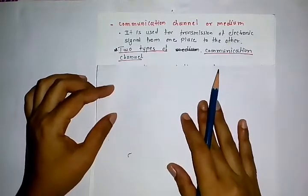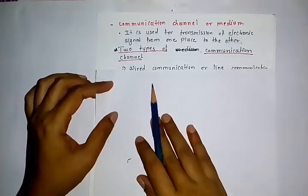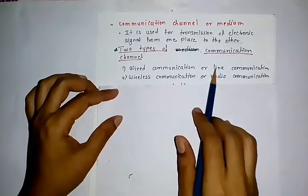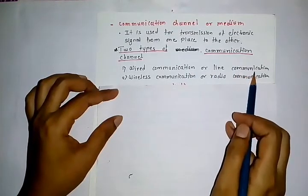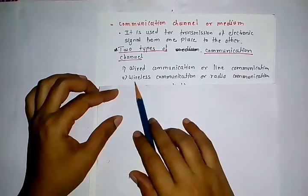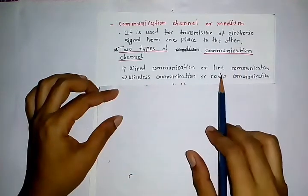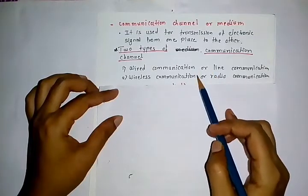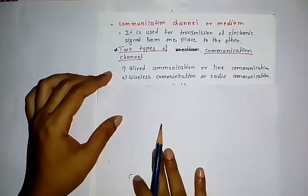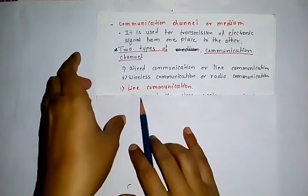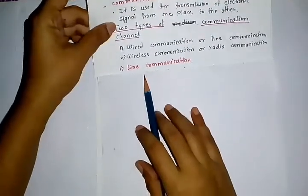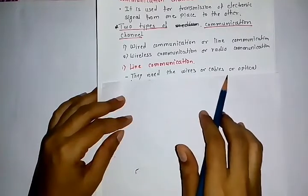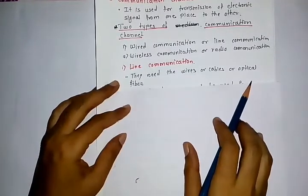There are two types of communication channels. First is wired communication, also called line communication. Second is wireless communication, also called radio communication. In line communication, we need wires, cables, and optical fibers.